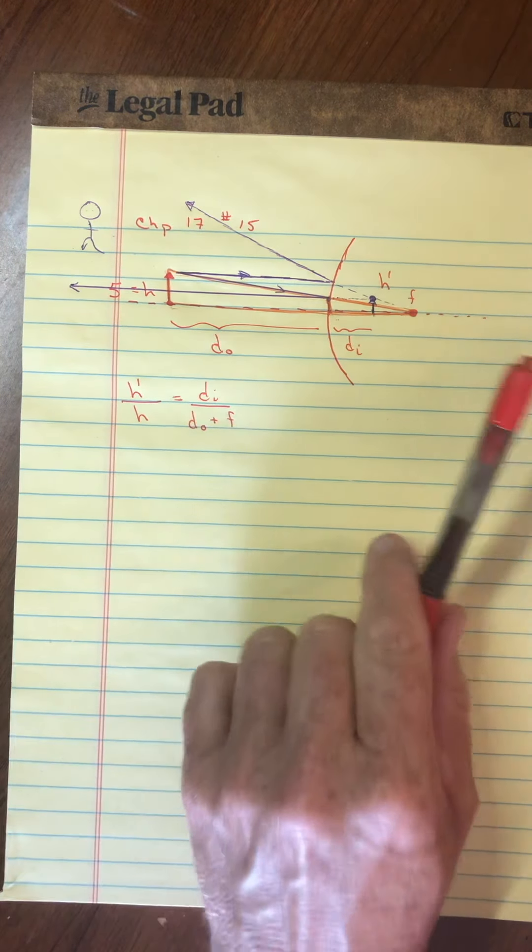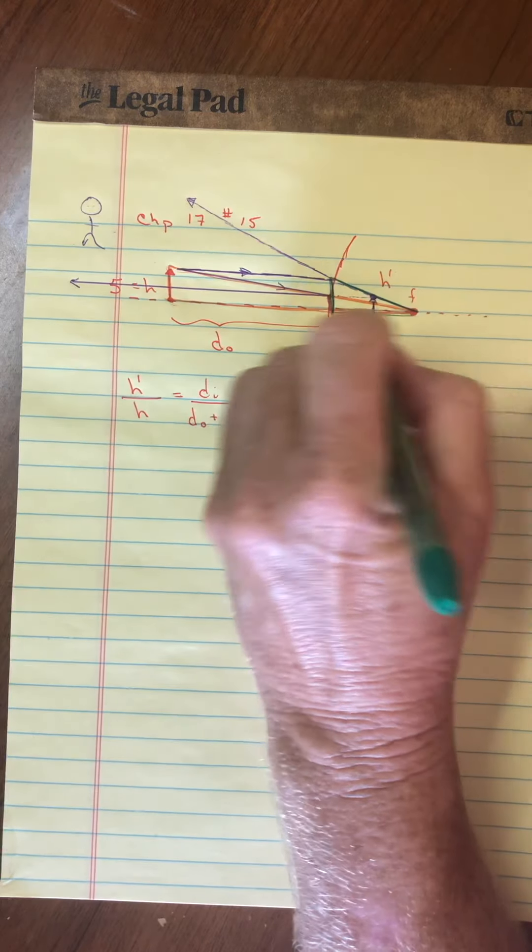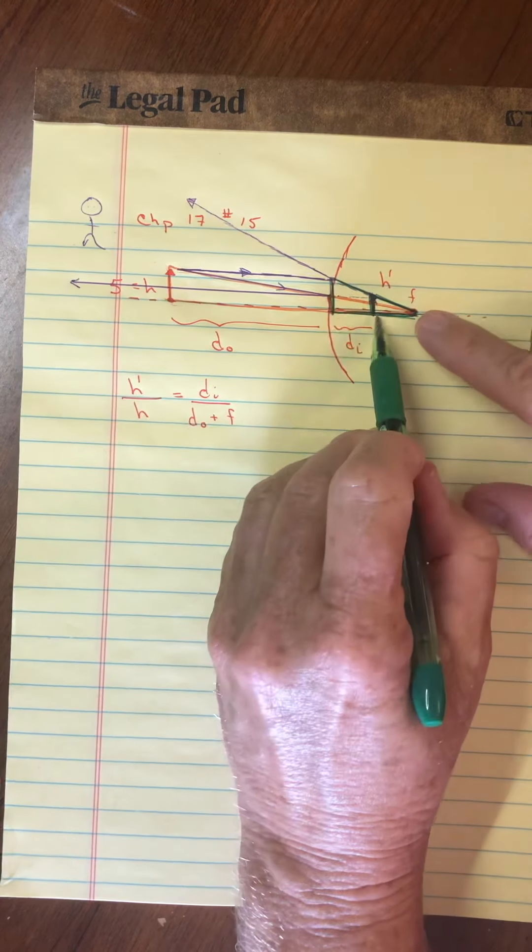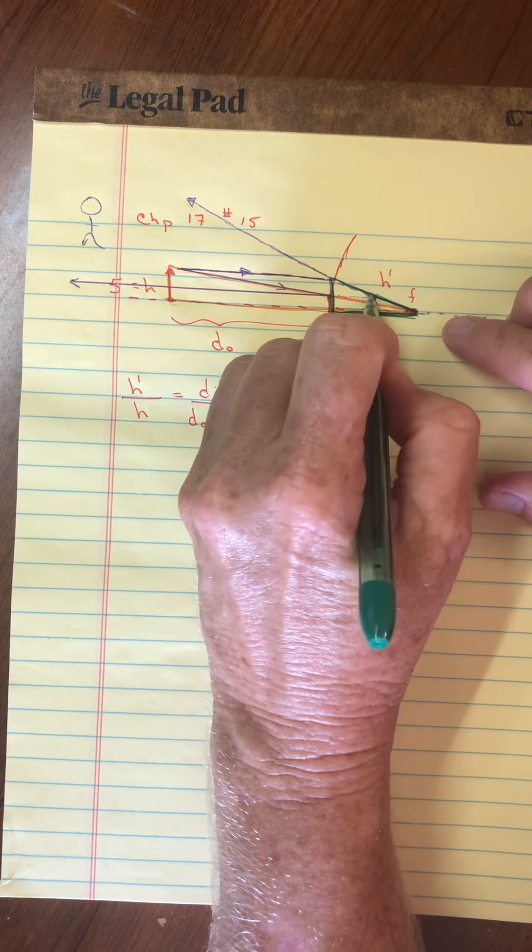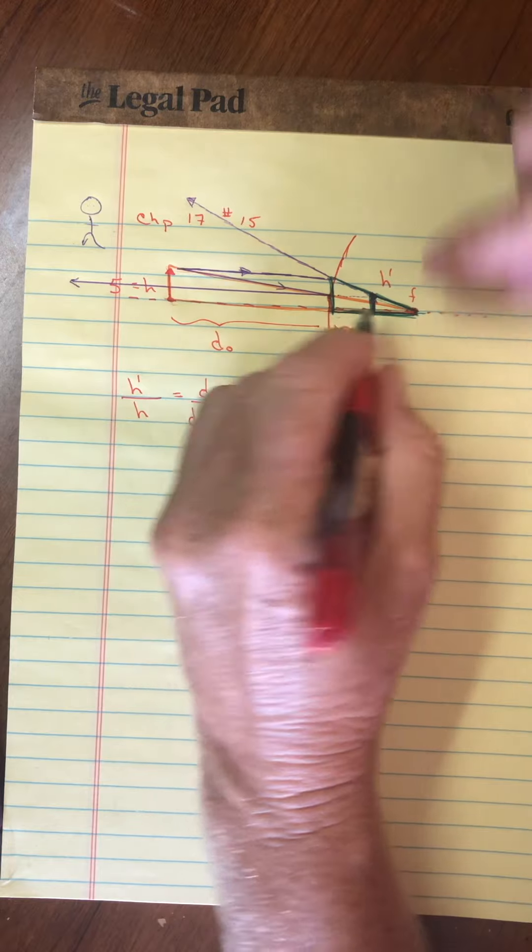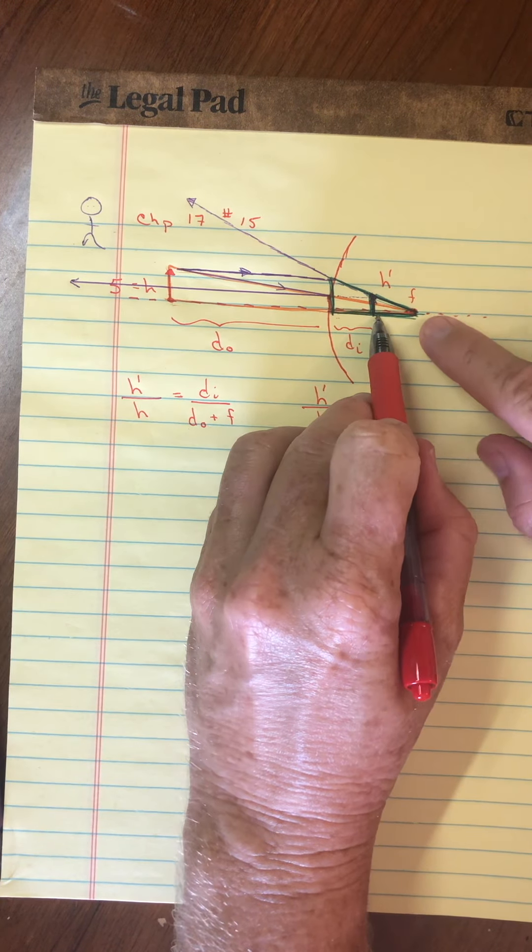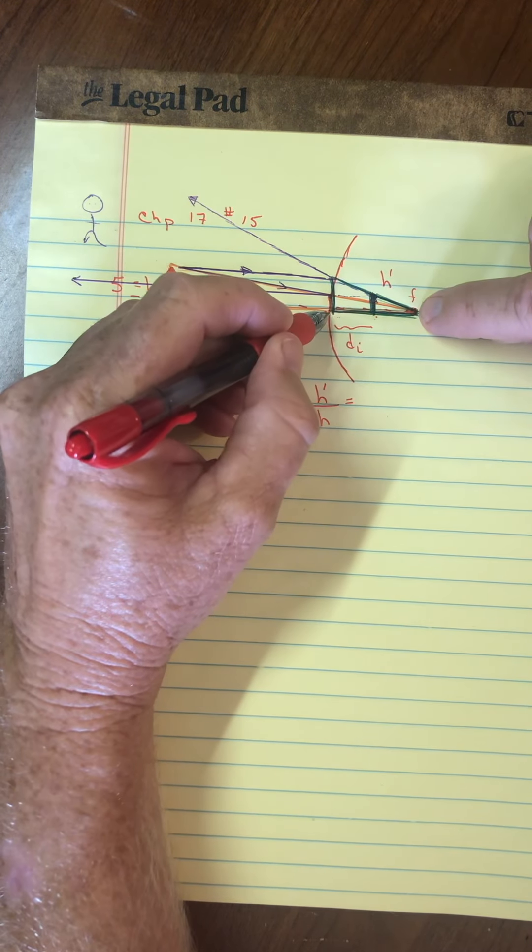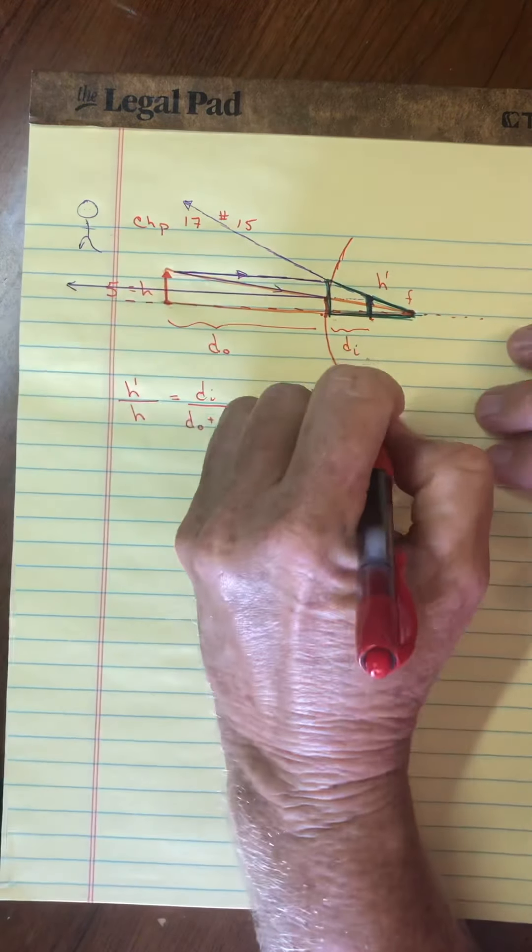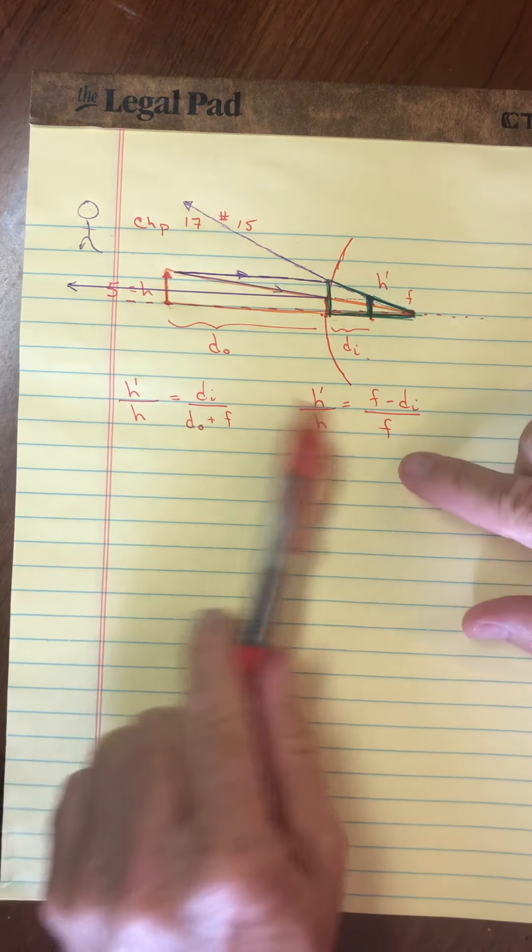Now, another set of triangles, and maybe I'll do it in green here, where I would make a big green triangle with a small green triangle representing the height here of the image. And again, if we do the same set of mathematics, we say the height of the image is to the height of the object as this distance. Now, this distance would be this whole distance minus the image distance. This whole distance is the focal length, so when I subtract off the image distance, I'm left with that small base. So that would be focal length minus image distance, and then it would be over the whole base, which is the focal length.